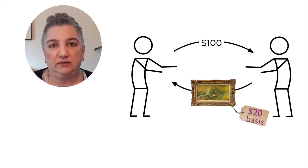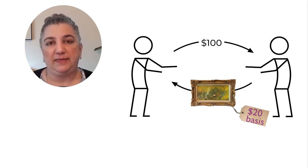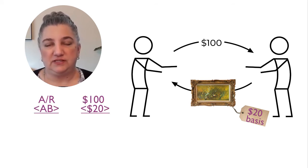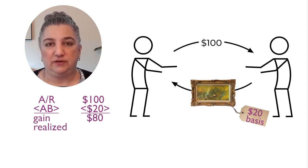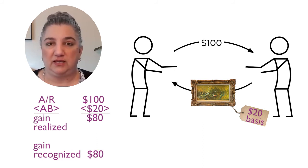Let's illustrate the calculation of gain with an example. If a taxpayer has a $20 adjusted basis in a painting, after any adjustments under Section 1016, and then sells the painting for $100, the $100 is the amount realized. The adjusted basis is subtracted from that, giving $80 of gain realized. That realized gain is recognized because there's no non-recognition provision that applies in this example.